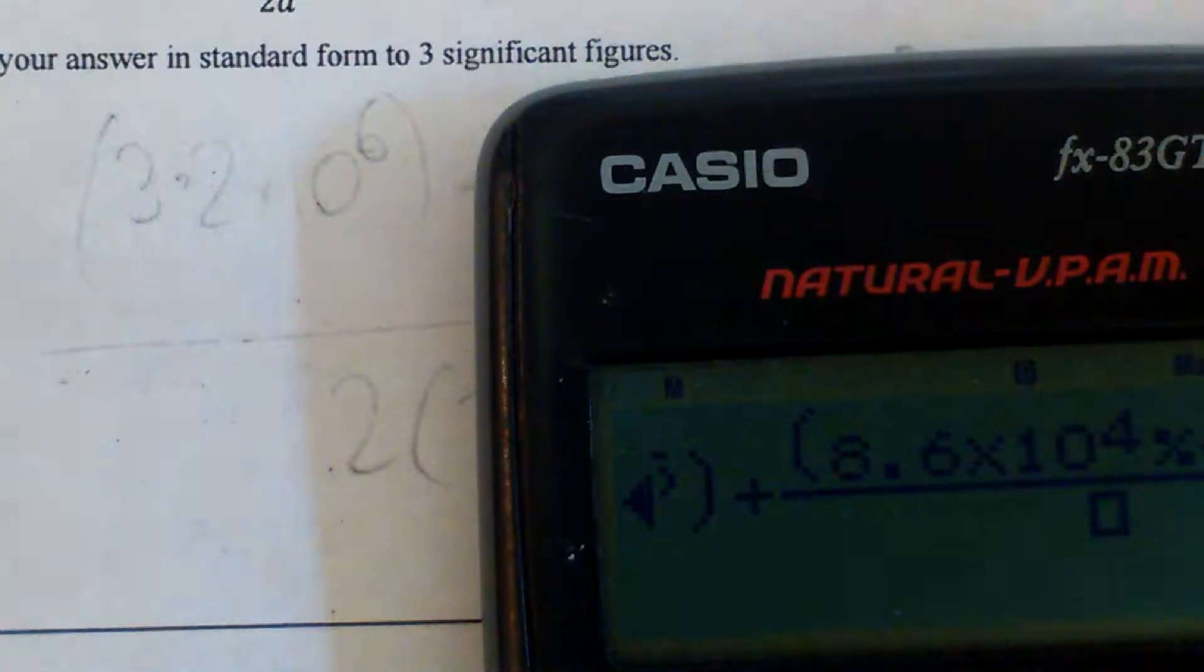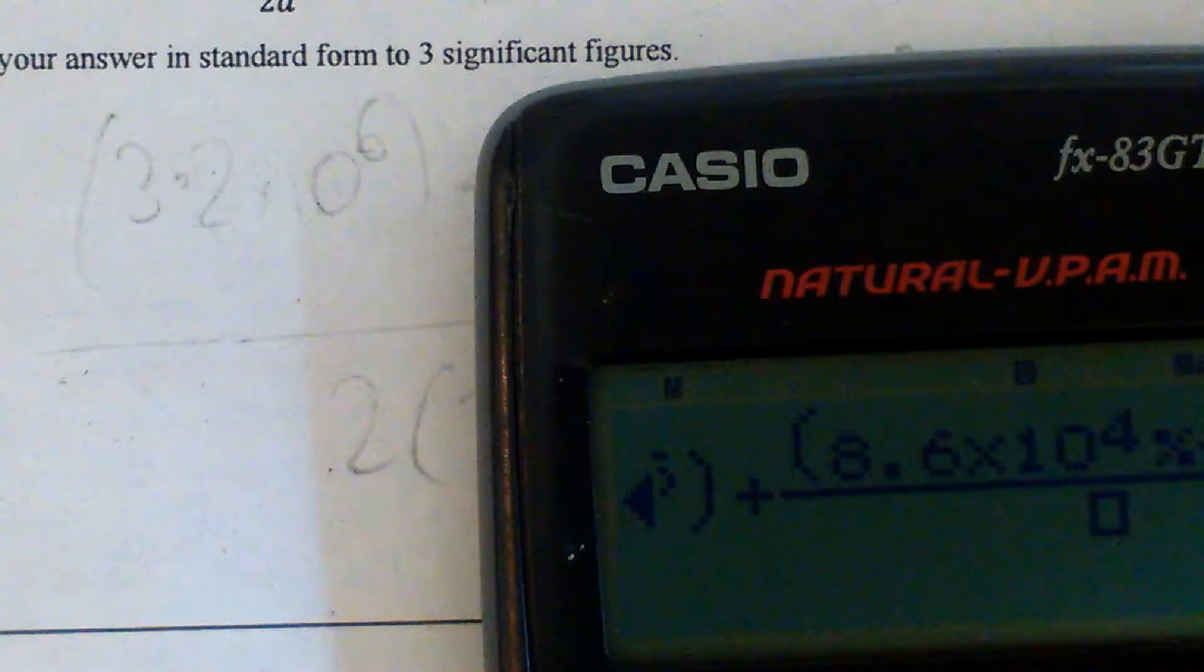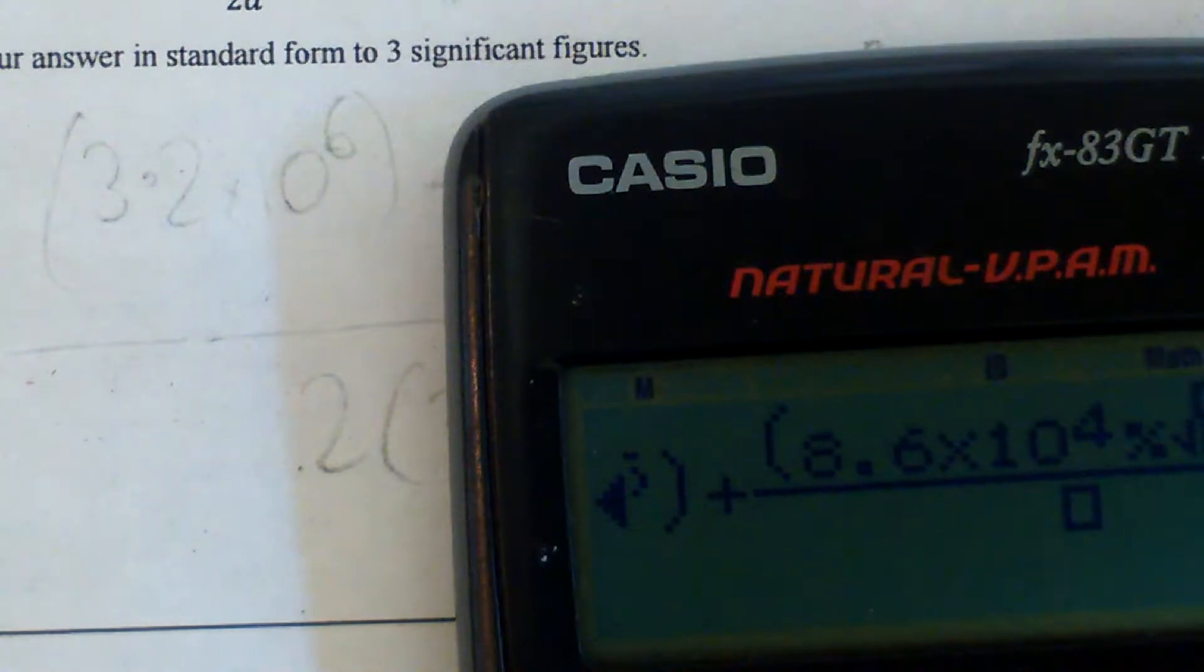Alright, work out the value of a plus b squared all over 2a, where a is 3.2 times 10 to the power of 6, and b is 8.6 times 10 to the power of 4.